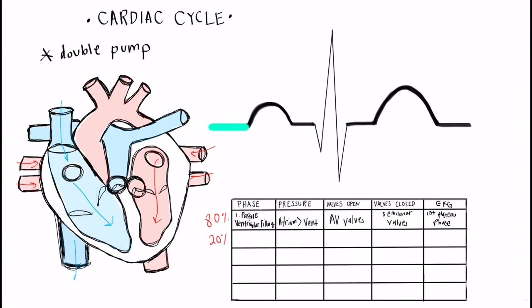The remaining 20% flows in during the second phase, known as atrial contraction. During atrial contraction the atriums contract to pump that remaining 20% of blood into the ventricles, which are now fully filled. Before the atriums contract, they must be depolarized, shown by the P wave on the EKG. The atrial pressure remains higher than ventricular pressure, so the AV valves are still the only open valves, as the ventricles still don't have enough pressure to open the semilunar valves. Atrial contraction is seen on the EKG at the second plateau phase.